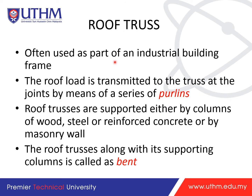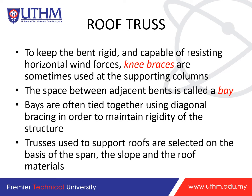Roof trusses are often used as part of an industrial building frame. The roof load is transmitted to the truss at the joints by means of a series of purlins. Roof trusses are supported either by columns of wood, steel, or reinforced concrete, or by masonry walls. The roof truss along with its supporting columns is called a bent. To keep the bent rigid and capable of resisting horizontal wind forces, knee braces are sometimes used at the supporting columns.